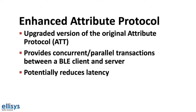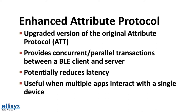For example, this is useful on a smartphone where multiple apps may be interfacing with a Bluetooth Low Energy device. By utilizing the enhanced attribute protocol, an app's attribute transaction would not be blocked while another app's attribute transaction is currently in progress, essentially allowing different apps to interact with a Bluetooth Low Energy device in parallel.